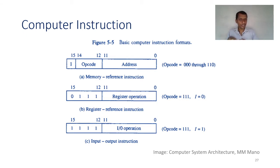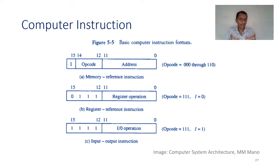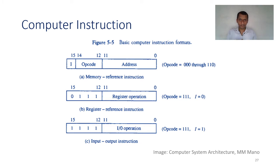A second type does not need to touch memory at all — instead it modifies the content of registers. There is one more variety where you have content in a register and perform some input/output operation. Using these three varieties of instructions you can form the basic instructions of the MANU machine.